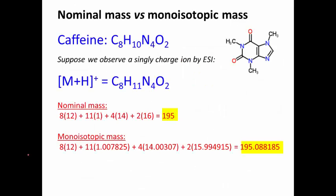I'll run you through a quick example here. Let's say that we're looking at the structure of caffeine, and there's its molecular formula. If this compound happened to be observed by electrospray with a singly charged ion, and we're assuming that it's protonated instead of a sodium in there, then we're going to add one more proton to it. So the formula that we're interested in calculating is this one right here.